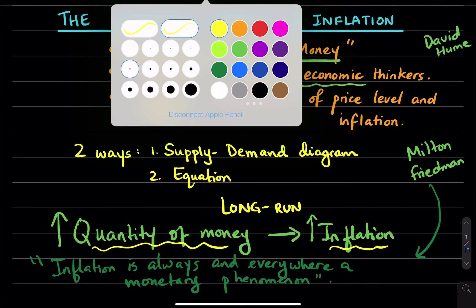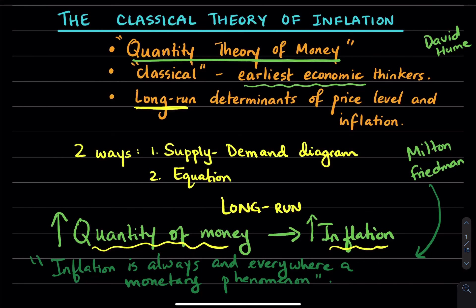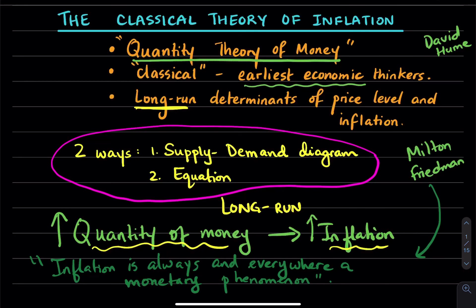Now, we're going to establish this relationship in two ways. The first way is going to be using a supply and demand diagram, and the second way is going to be a quantity equation. Both of these ways are going to establish this relationship between quantity of money and inflation.